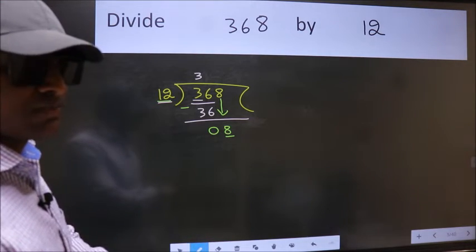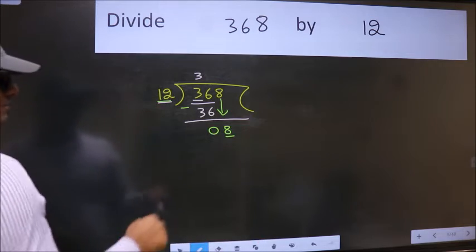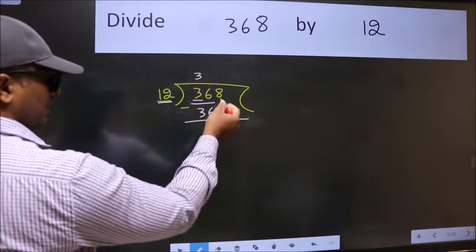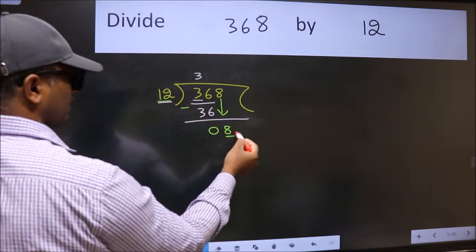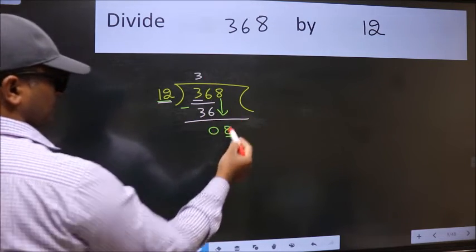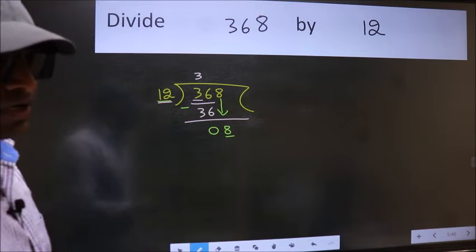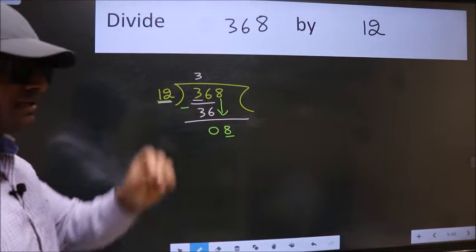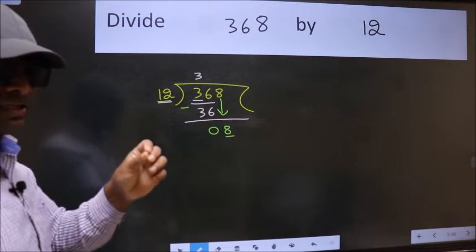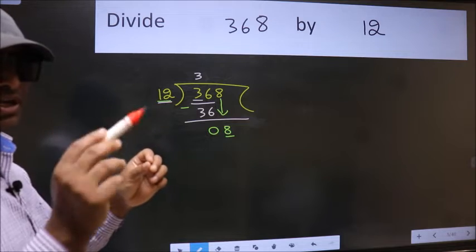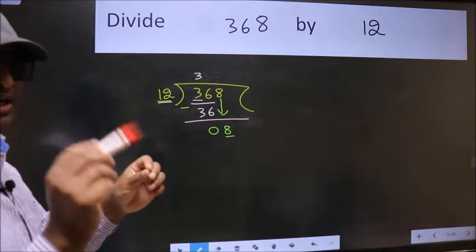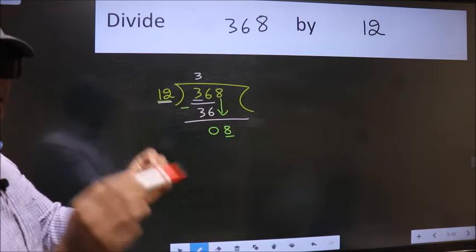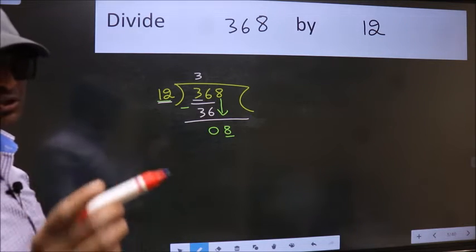Why is it wrong? Because just now you brought this number down and in the same step, you want to put dot, take 0, which is wrong. I repeat, bring down the number and also put dot, take 0. Both at the same step you should not do.